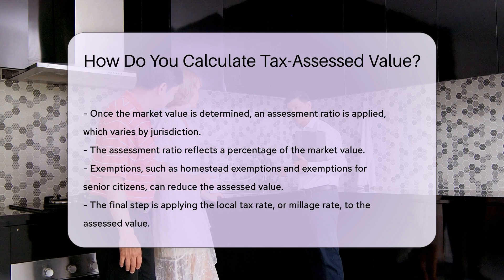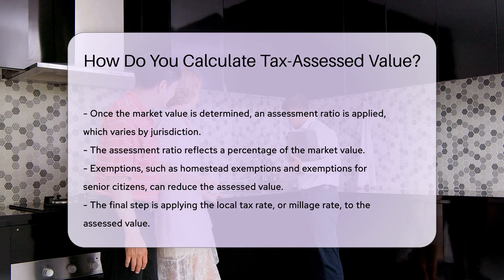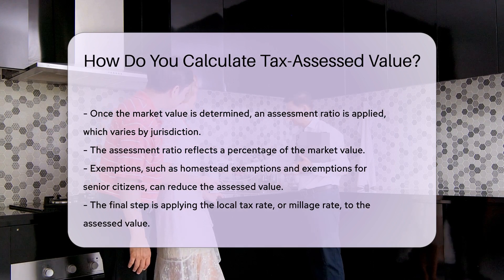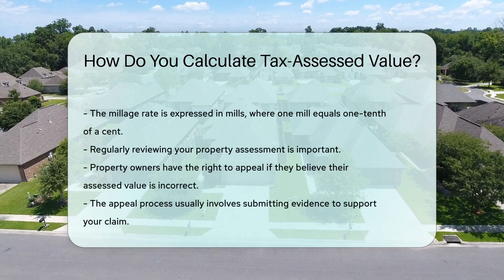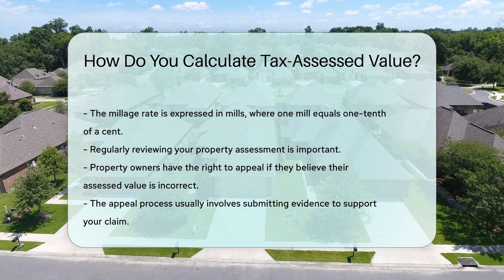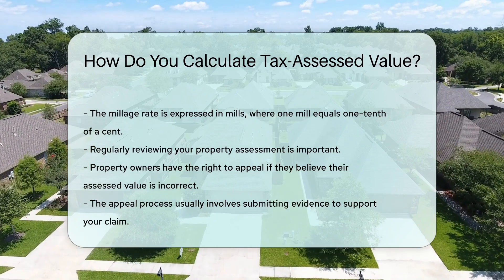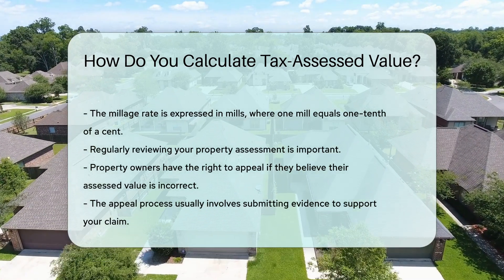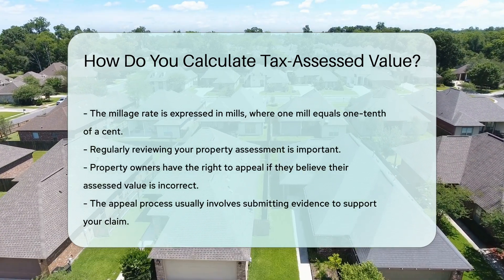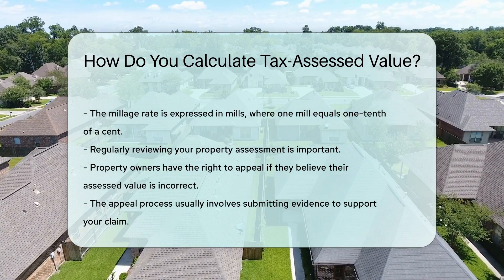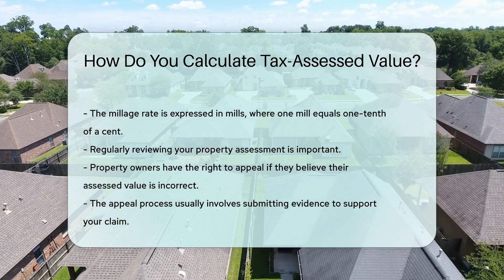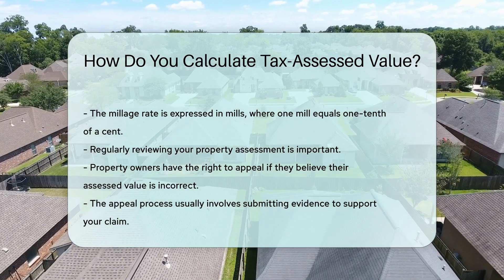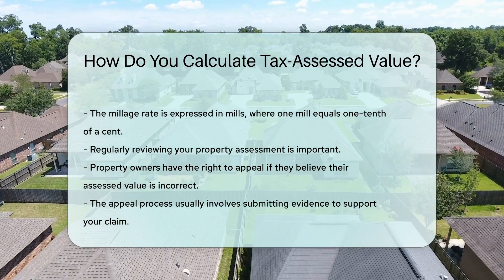The final step involves applying the local tax rate, also known as the millage rate, to the assessed value. The millage rate is expressed in mills, where 1 mill equals 1 tenth of a cent. For example, a millage rate of 20 mills means $1.20 of tax per $1,000 of assessed value.